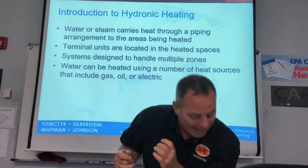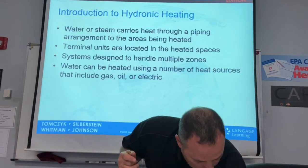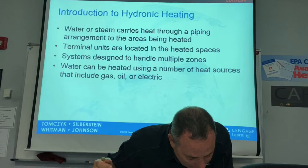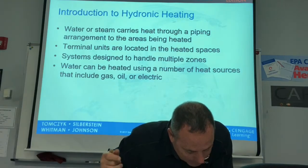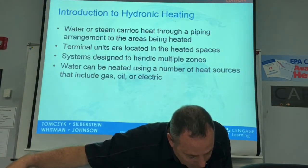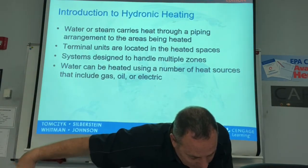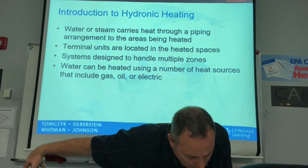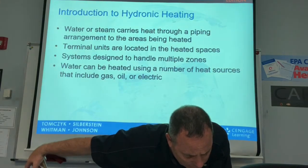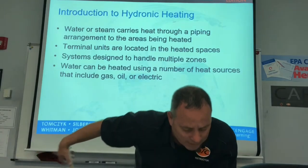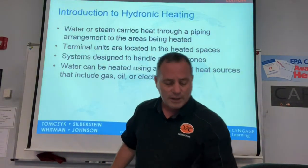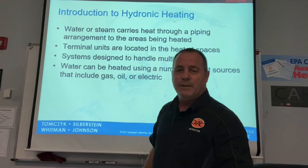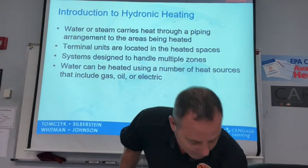Water can be heated from different heat sources: electric heat, oil heat, and gas heat. Sensing elements start and stop the heat source according to the water temperature. Water is circulated through the system with centrifugal pumps, and there are thermostatically controlled zone valves that go to different rooms in the house — see figure 33.1 at the top of page 970.